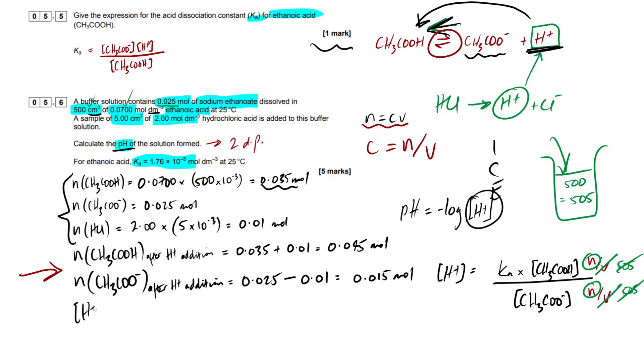So H plus then equals our Ka, which was given to us in the question, 1.76 times 10 to the minus 5. And we're going to multiply that by our ethanoic acid concentration, but I'm just going to leave it as the moles right here, because as I mentioned, our volumes cancel. So I'm going to put that as 0.045, divided by our ethanoate moles, or it should be concentration, keep that in mind, but because we've only got one concentration on top, one on the bottom, we can just cancel it. So that's going to be 0.015. If you put this into your calculator, you should get an answer of 5.28 times 10 to the minus 5.